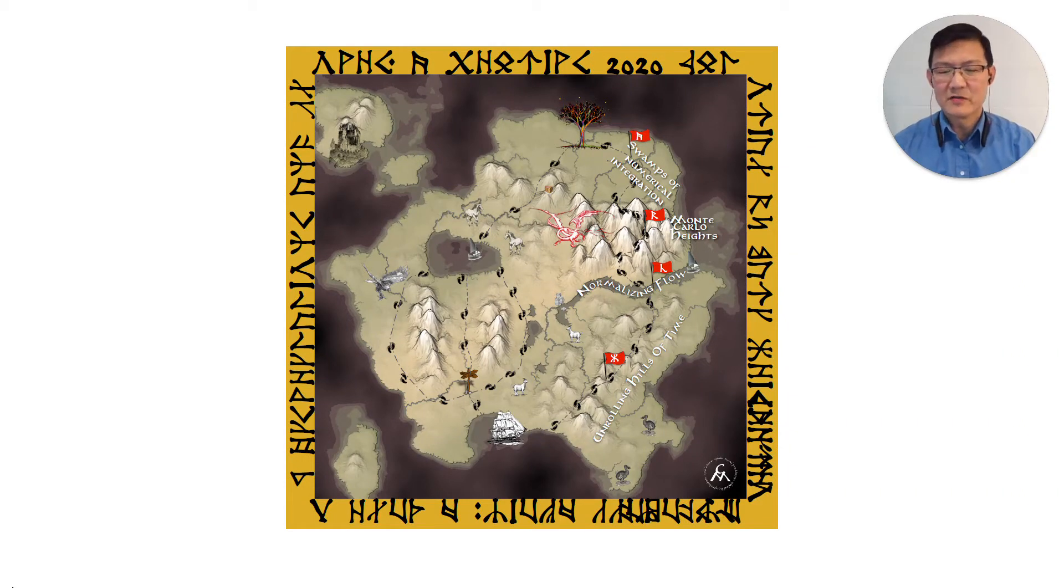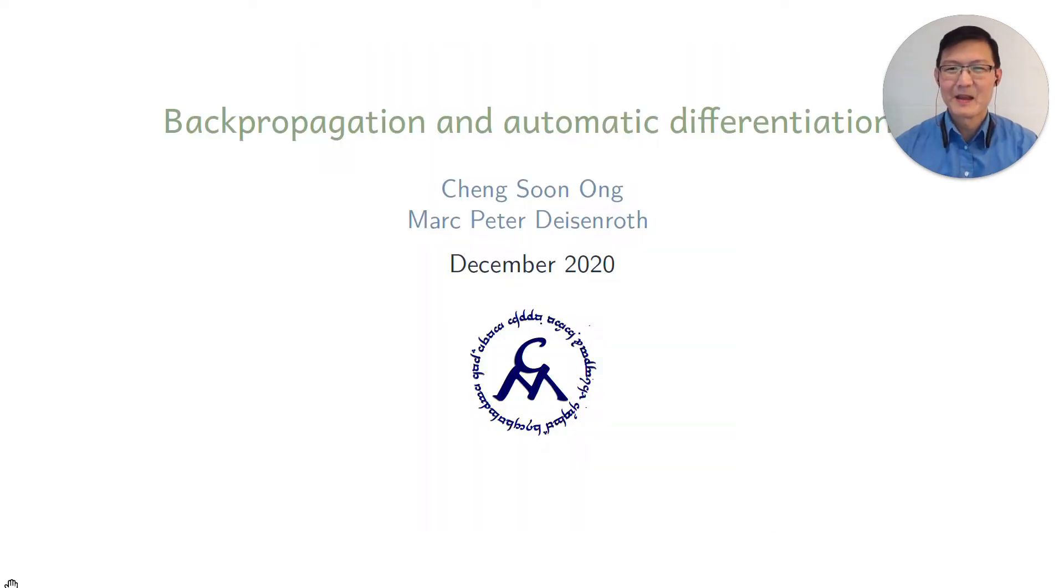Welcome to our journey of integration and differentiation, where we continue our investigations of slopes and expectations. Previously, we had looked at unrolling hills of time, and now we will take a swim in the nice warm waters of Backprop Bay. In this lecture, we will look at backpropagation and automatic differentiation.